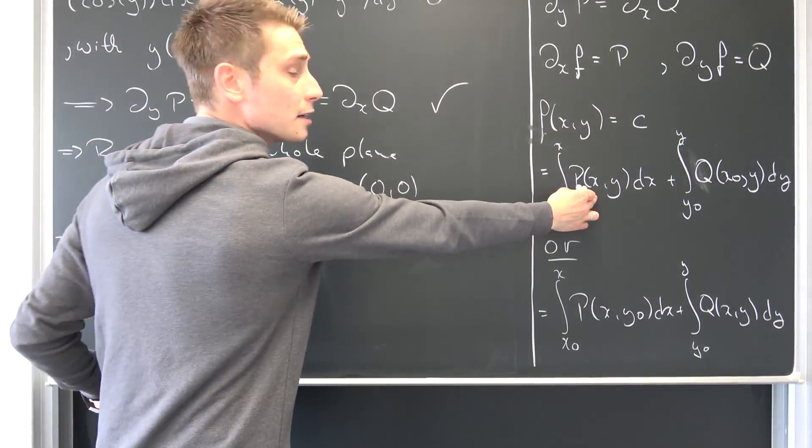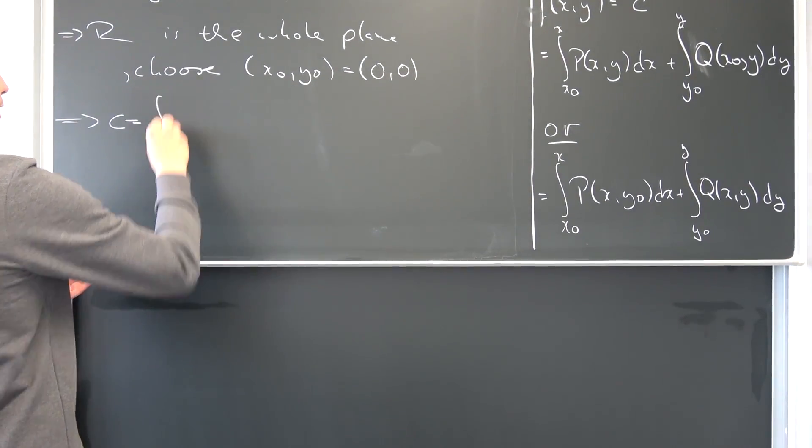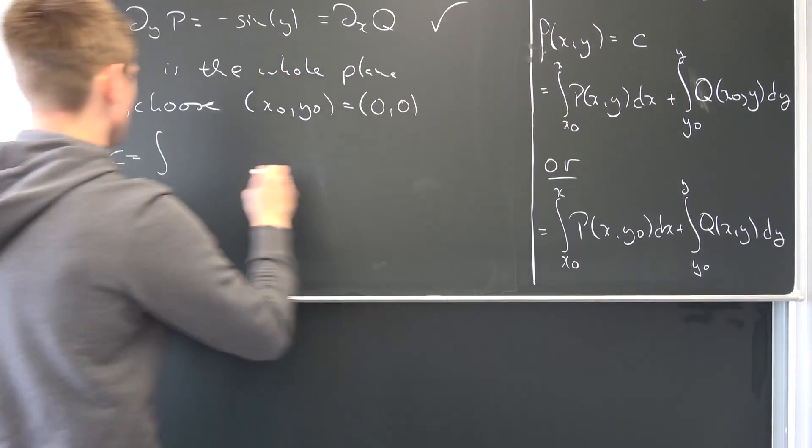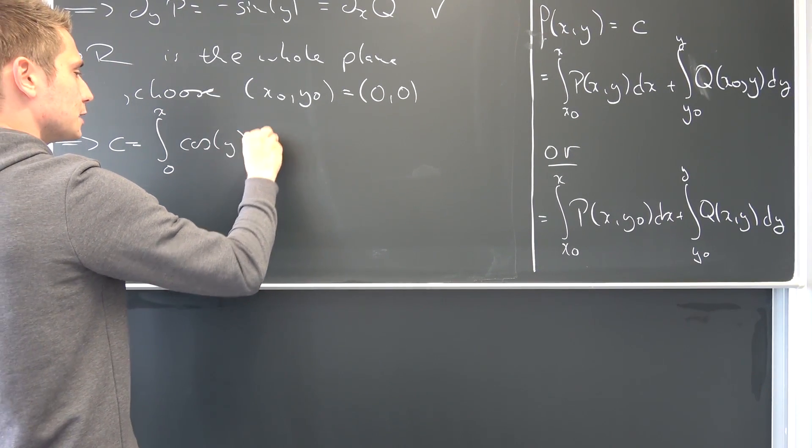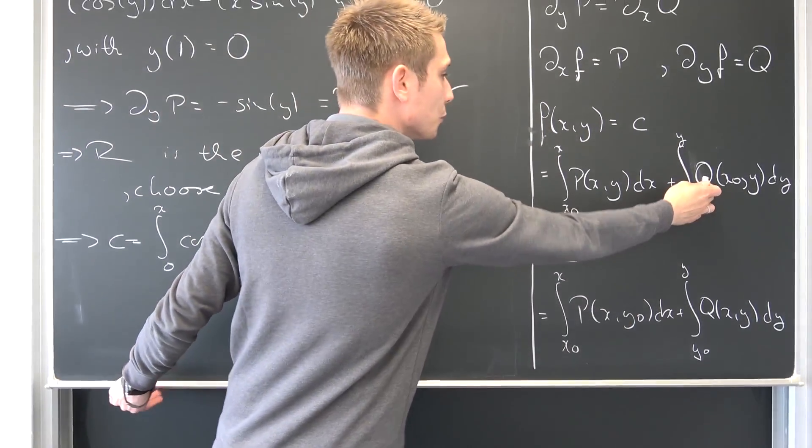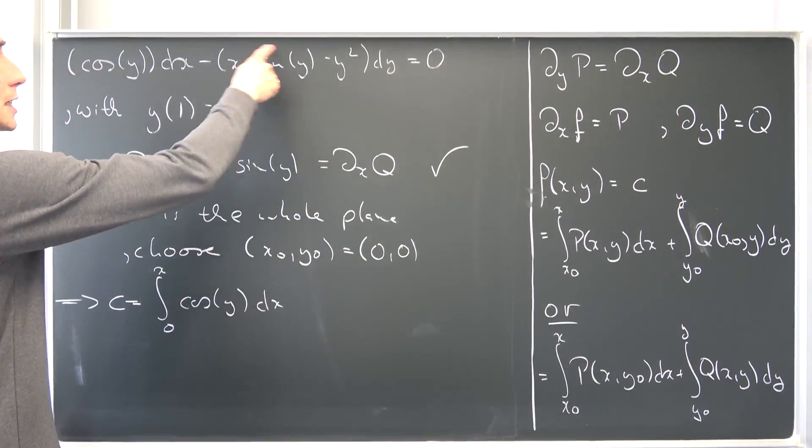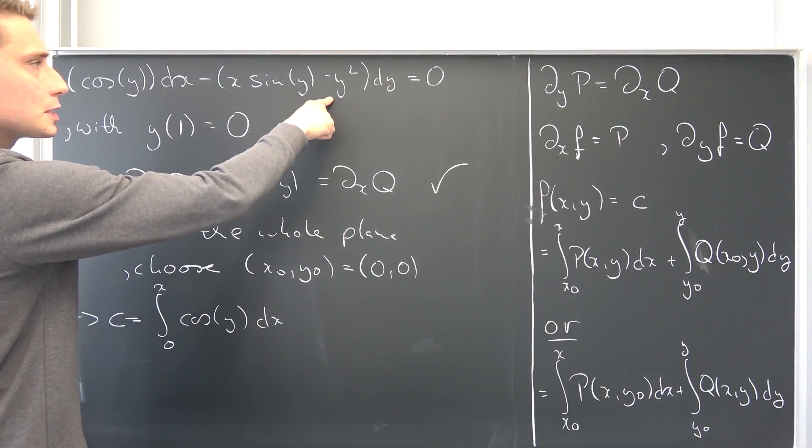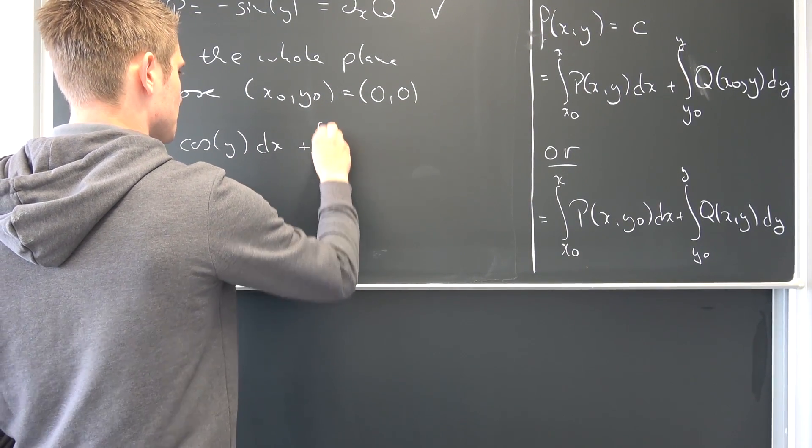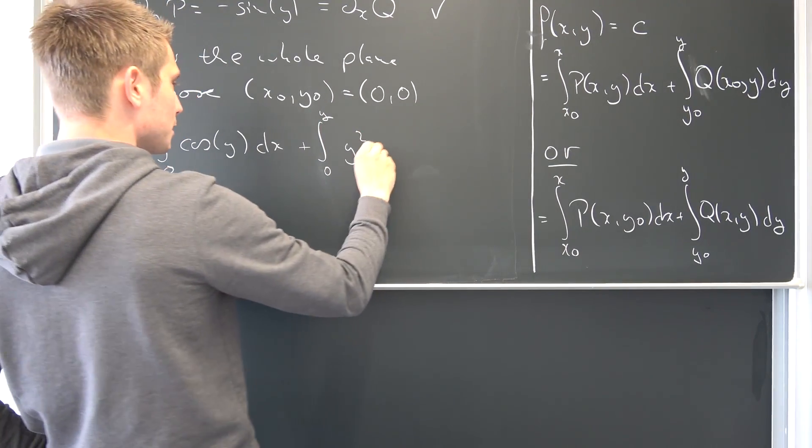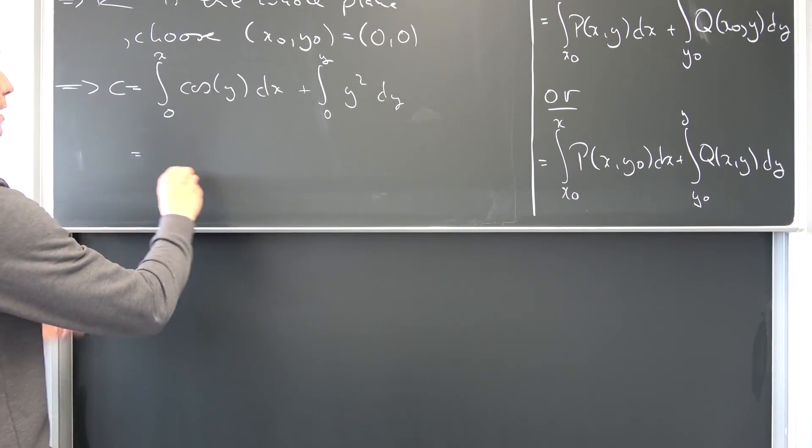All we know is that our function F is nothing but C, which is nothing but P integrated with respect to X. P is nothing but cosine of y. Integral from x_0 to x, so 0 to x of cosine of y integrated with respect to x. And also we have Q(x_0, y). X_0 is nothing but 0 right here, so this is going to vanish and we are going to have positive y^2 that we have to integrate. So plus integral from 0 to y of positive y^2 integrated with respect to y. This right here is a really easy feat.